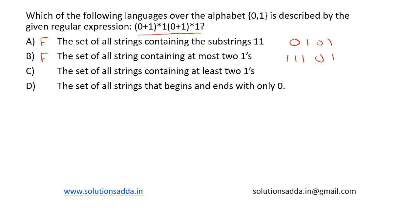Option D: The set of all strings that begins and ends with only 0. This is also false, we can generate a string 11. Option C now: The set of all strings that contains at least two 1's.